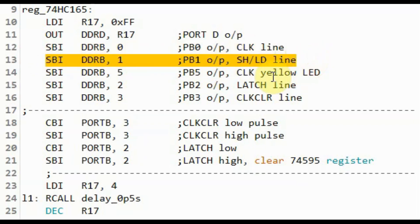We set pin PB1 as output which is the shift load line for the 74165. We set pin PB5 as output where the yellow LED is connected which will be used as a clock indicator. And we set pin PB2 as output which is the latch line for the 74595 and pin PB3 as output which is the clock clear line for the 595.